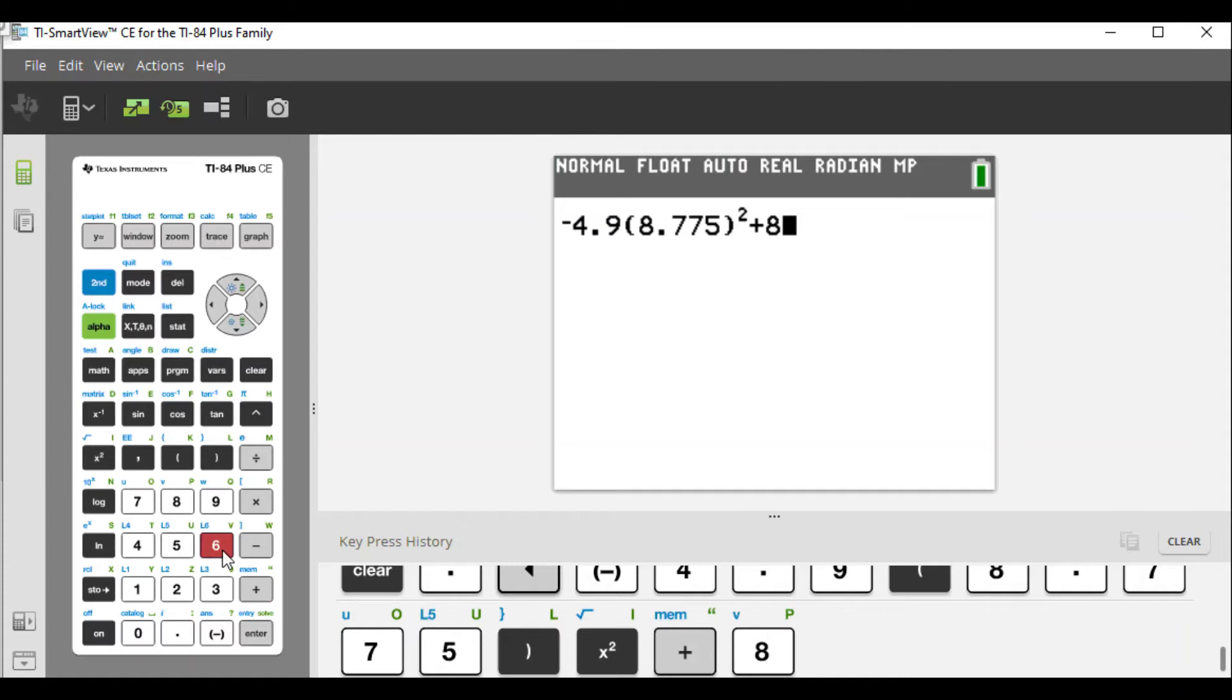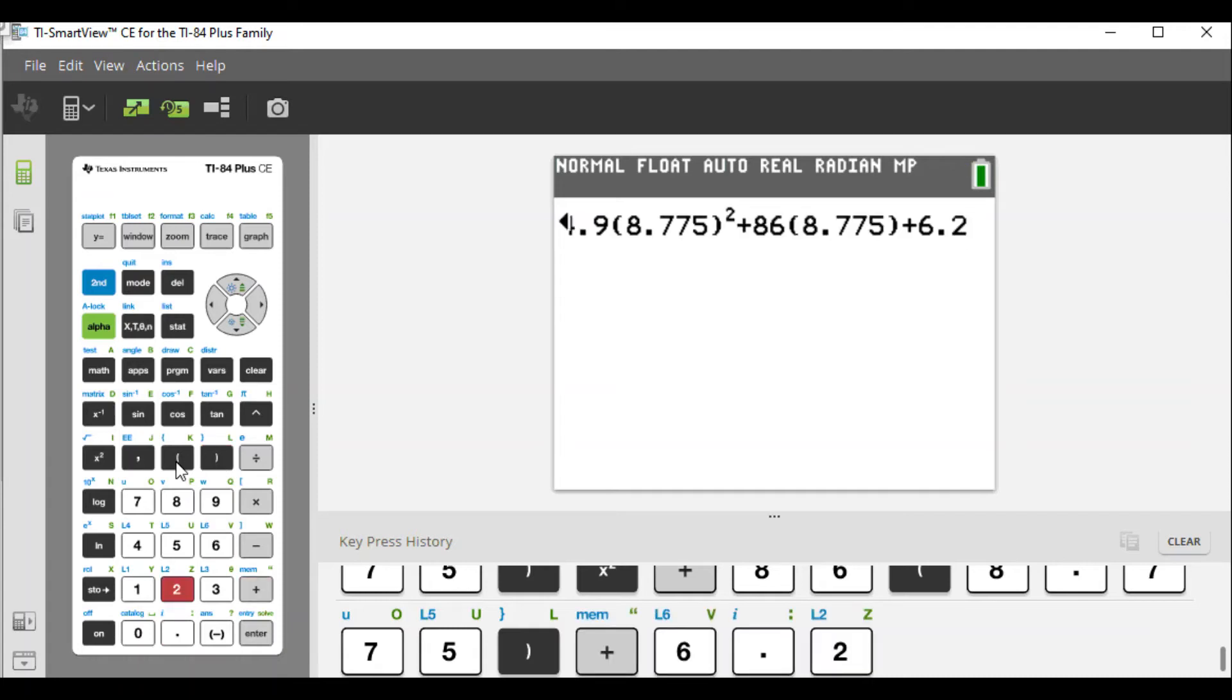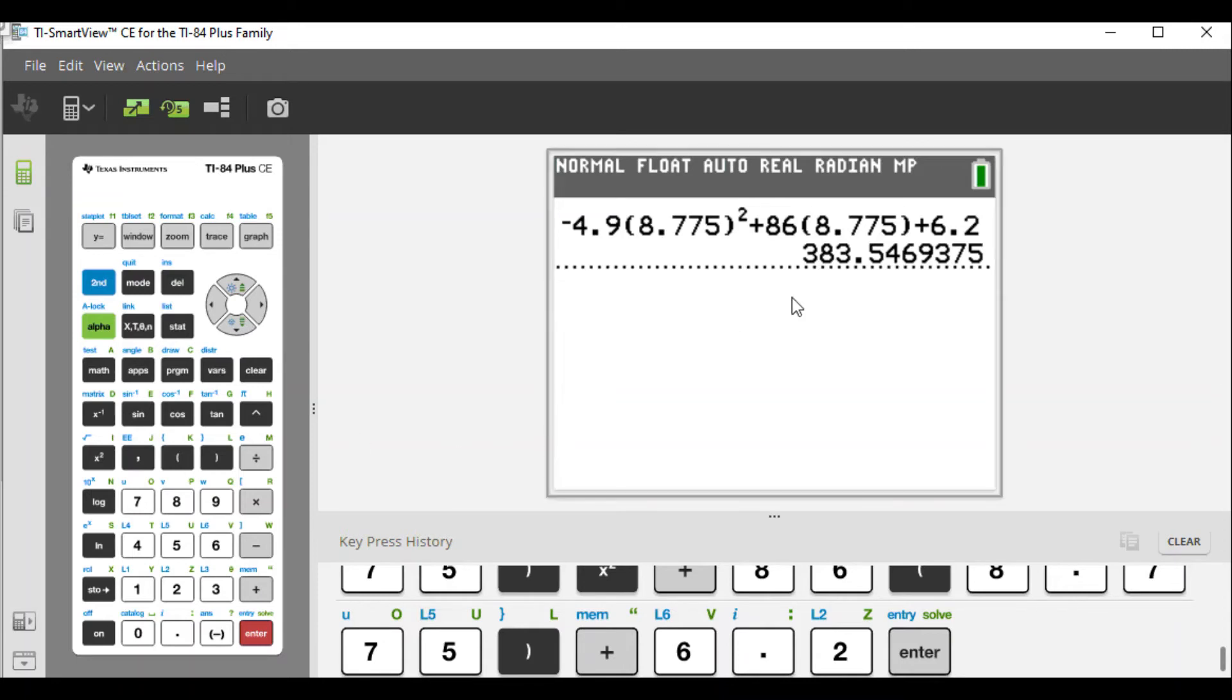So plus 86, and again I'm going to use parentheses here to put the number around, 8.775. Close parenthesis and then plus 6.2. After you plug this in, we're going to get a value of 383.546937.